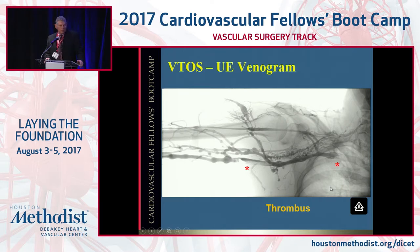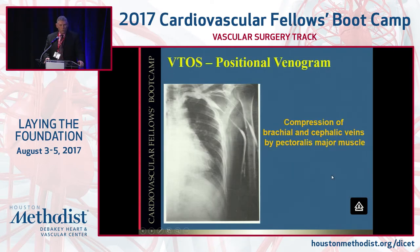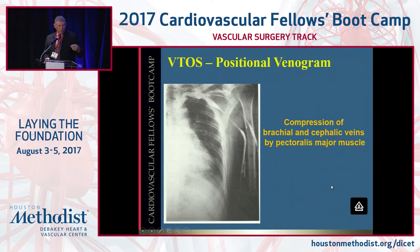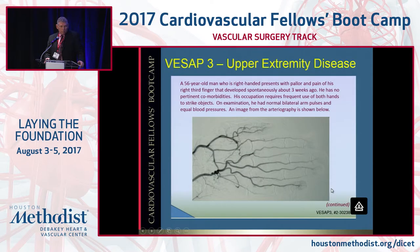For venous TOS, sometimes you have to do an upper extremity retrograde venogram. You can cannulate the basilic vein, which is better than the cephalic, or do ultrasound-guided access of the brachial vein and shoot your venogram. Here it shows thrombus in two areas. You can do a positional venogram — if somebody has symptoms you're worried about VTOS but it's not showing up, change the position of the arm. With the arm compressed against the side, you can see the cephalic and brachial veins compressed by the pec major muscle. Here's an axillosubclavian vein compression without thrombus presenting with arm swelling.